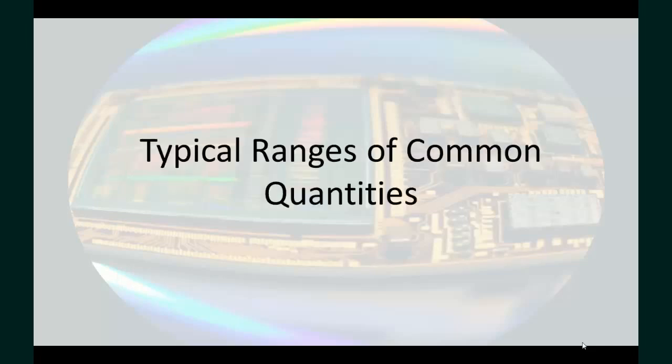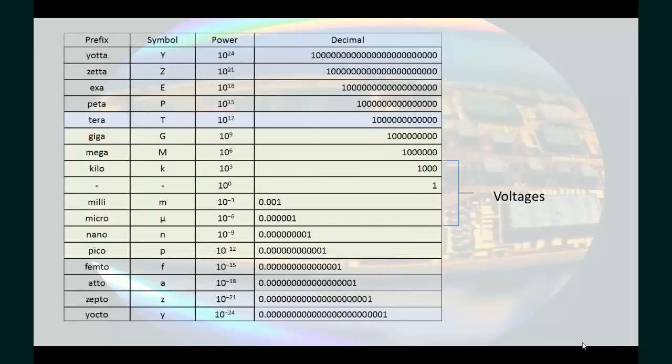Some common ranges for quantities used in this series on electrical engineering would be voltages will generally fall into the micro to kilovolt range, currents will usually be from microamp to the amp range.